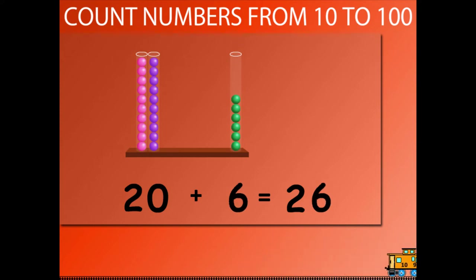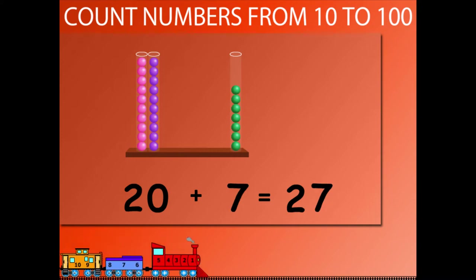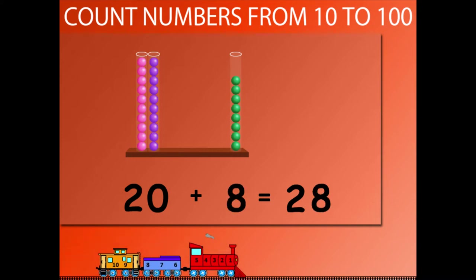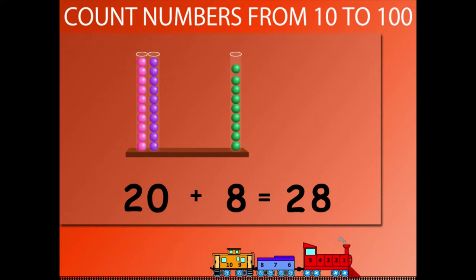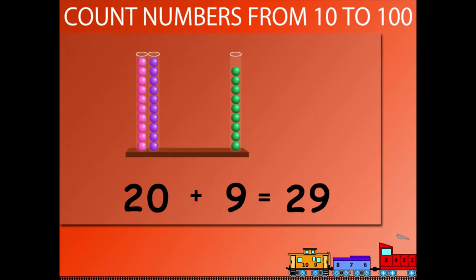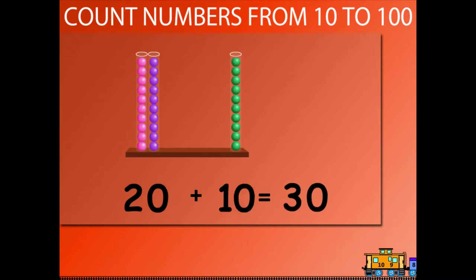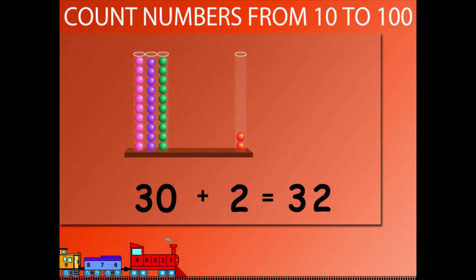20 plus 7 is equal to 27. 20 plus 8 is equal to 28. 20 plus 9 is equal to 29. 20 plus 10 is equal to 30. 30 plus 1 is equal to 31. 30 plus 2 is equal to 32.